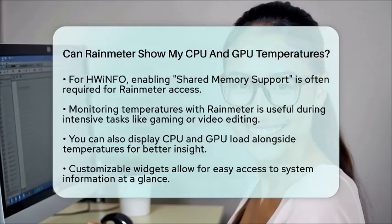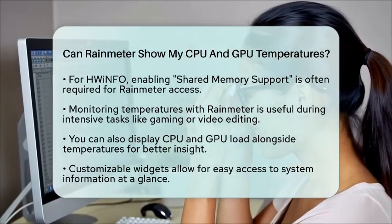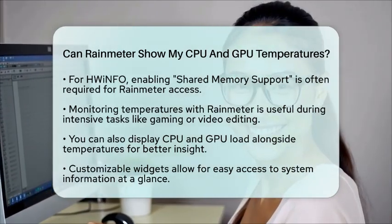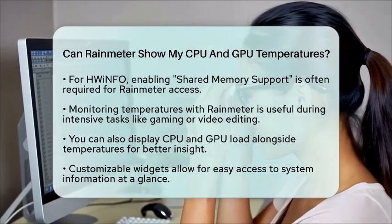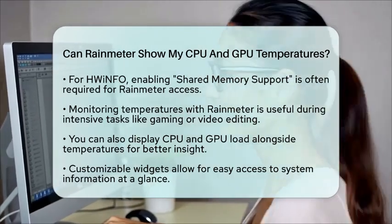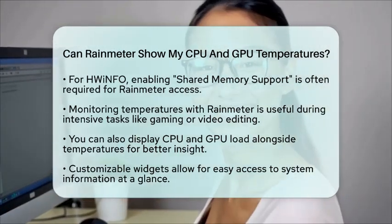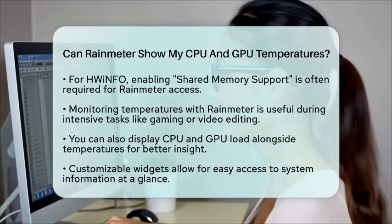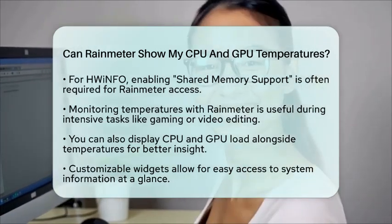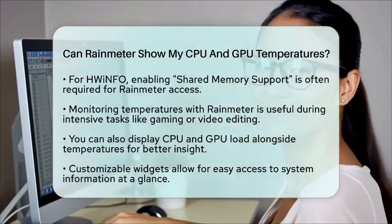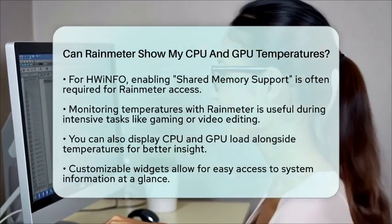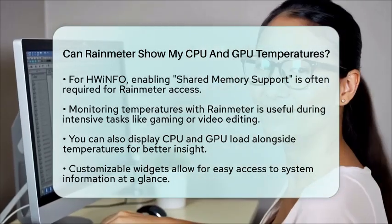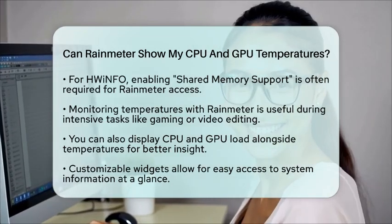In summary, RainMeter can effectively show CPU and GPU temperatures on your personal computer. However, it relies on external hardware monitoring software to provide accurate sensor data. By combining RainMeter with tools like HWINFO or MSI Afterburner and using compatible skins, you can create a customizable and informative system monitoring setup right on your desktop.